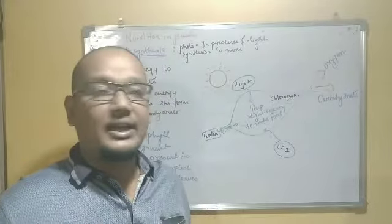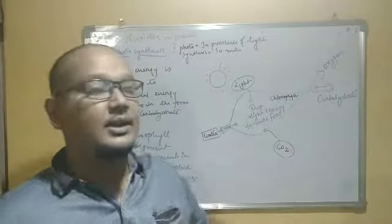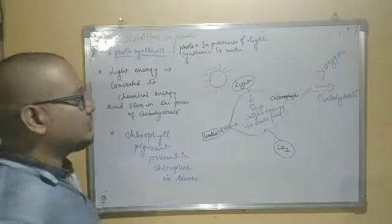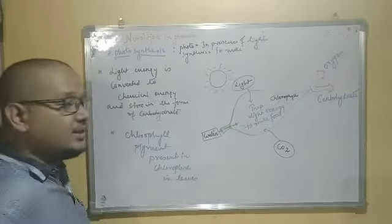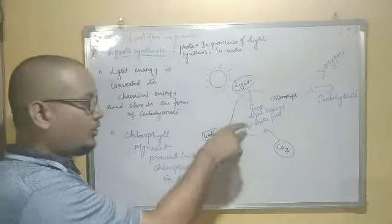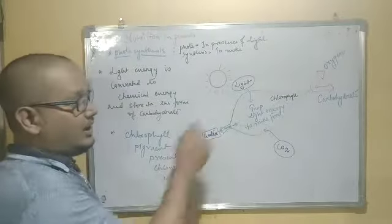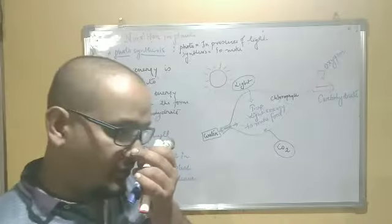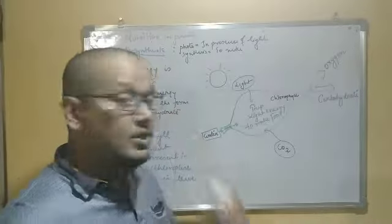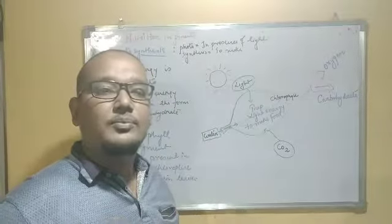This is the diagram. The sun releases light. When light falls on the leaf, it has green color because of the chlorophyll pigment present in chloroplasts, which are present in plant cells.